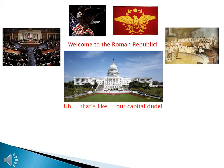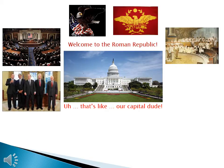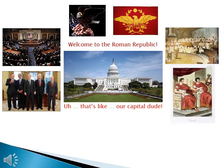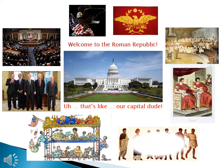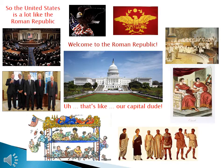In Rome, it's called the assembly. In our country, we have the president — a person who represents us in foreign affairs, controls the army, and enforces the laws. Rome had something similar: two councils who are like co-presidents. The United States has a social structure, and so did Rome. As you will see, there are some major differences.